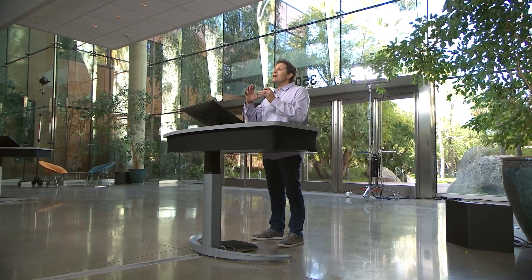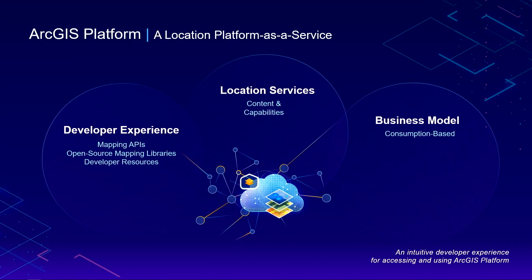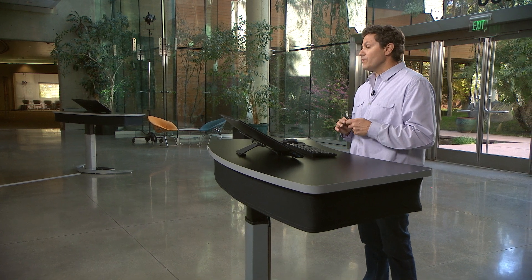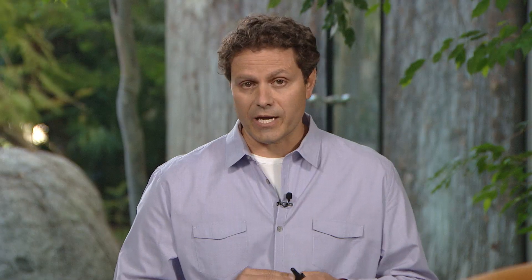ArcGIS Platform is made up of three high-level elements. First is an excellent developer experience, helping you be successful by giving you access to our APIs, but also the ability to use the mapping library of your choice. The second element, and probably the centerpiece of ArcGIS Platform, is the extensive and comprehensive set of location services that deliver both content and capability. And finally, a simple, transparent, and easy-to-understand business model that's fully consumption-based, where you pay only for what you use. These three elements come together and provide a very intuitive experience for developers to leverage ArcGIS Platform.